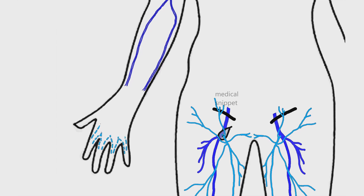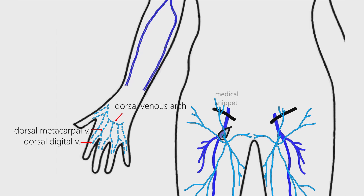On the dorsum of the hand, the dorsal digital veins form dorsal metacarpal veins. They drain into the dorsal venous arch. The lateral end of the dorsal venous arch continues as the cephalic vein.